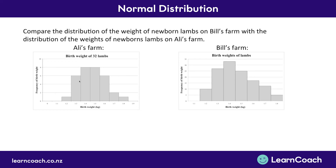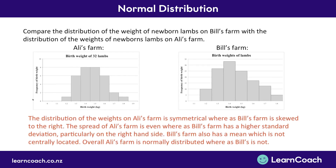In this question, we're showing two graphs: birth weight of lambs at Ali's farm and birth weight of lambs at Bill's farm. We need to compare the distribution — that means the shape of the graph — of the weight of newborn lambs on Bill's farm with Ali's farm. The three things we're really looking for are center (that's the mean — where's the average), spread (how spread out are these graphs), and skew (are they symmetrical on either side).